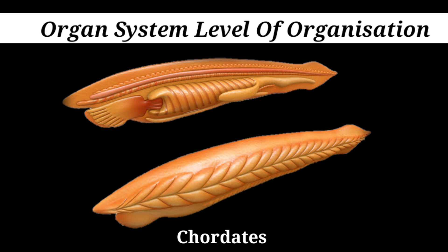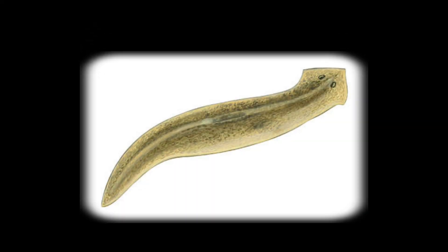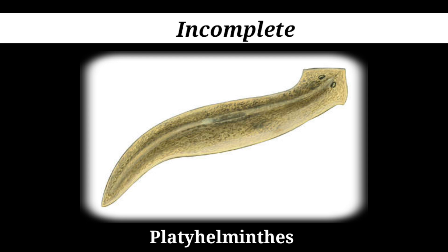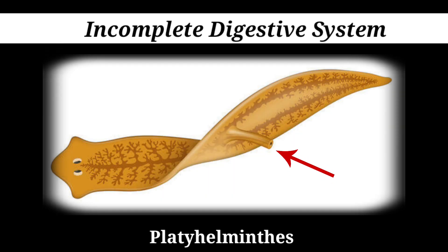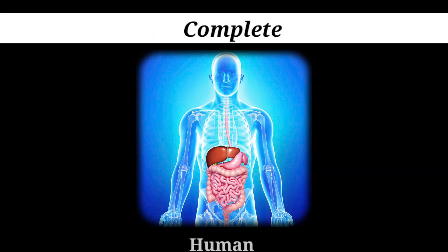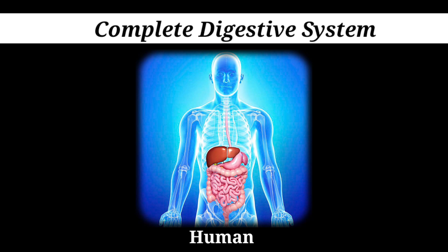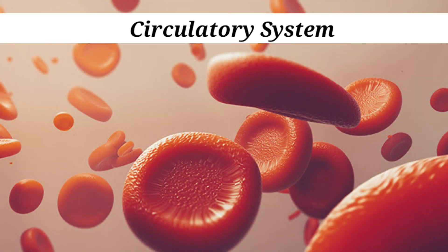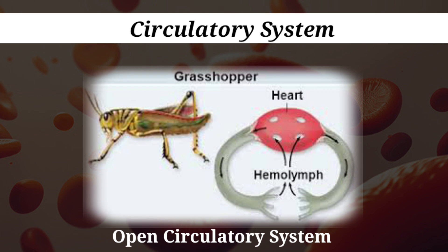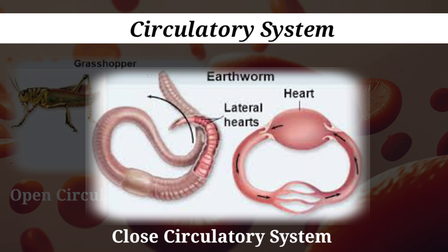Organ systems can also differ in complexity in various animal groups. For example, platyhelminthes have an incomplete digestive system, where a single opening outside of the body serves as both the mouth and the anus. Whereas humans have a complete digestive system with two openings — a mouth and an anus. You will also find two types of circulatory systems in animals: open circulatory systems and closed circulatory systems.